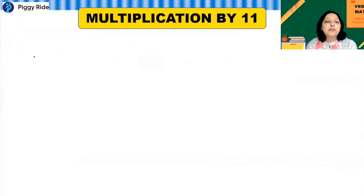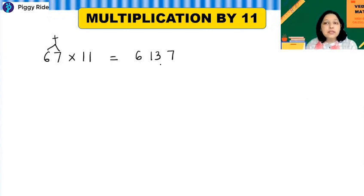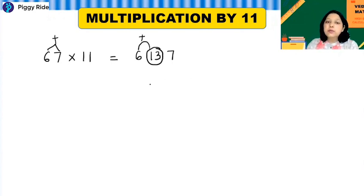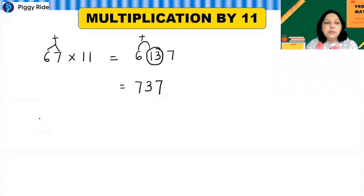Suppose the question is 67 times 11. First step: write 6 and 7 as they are. 6 plus 7 is 13. Since 13 is a two-digit number in the middle, shift the 1 to the left side — you always shift the tens digit of any two-digit result to its left. So the answer becomes 737.